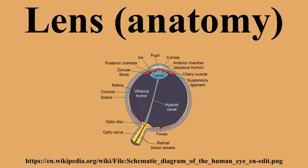Development of the human lens begins at the 4 mm embryonic stage. Unlike the rest of the eye, which is derived mostly from the neural ectoderm, the lens is derived from the surface ectoderm. The first stage of lens differentiation takes place when the optic vesicle, formed from outpocketings in the neural ectoderm, comes in proximity to the surface ectoderm. The optic vesicle induces nearby surface ectoderm to form the lens placode. At the 4 mm stage, the lens placode is a single monolayer of columnar cells. As development progresses, the lens placode begins to deepen and invaginate.